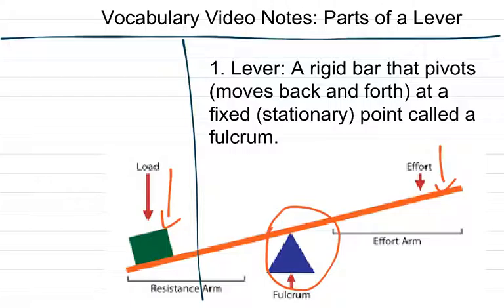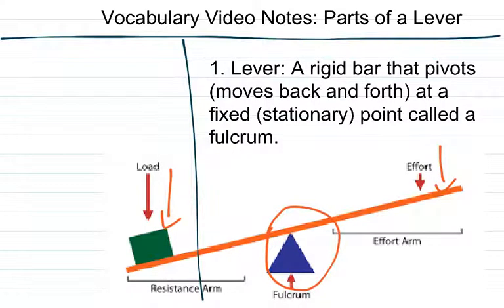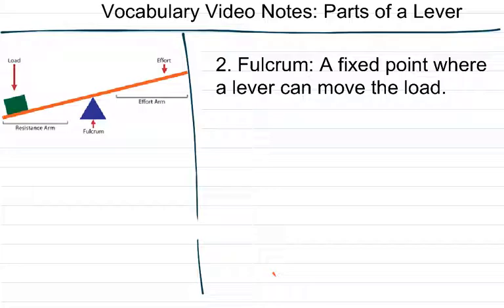So this whole system of a lever moving a load is called a simple machine that has a mechanical advantage. So go ahead and create the original sentence, and then draw this picture of a lever. Alright, let's move on to the next point. So number two, write fulcrum.